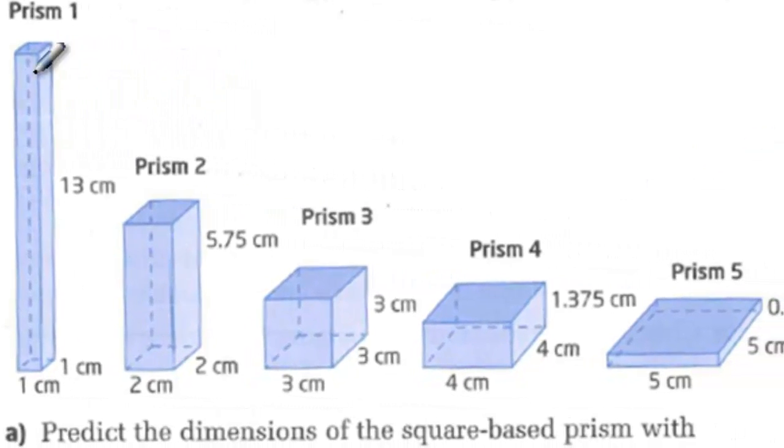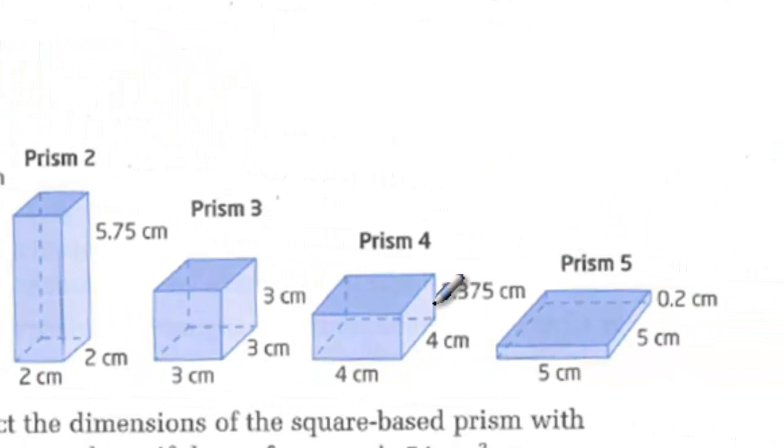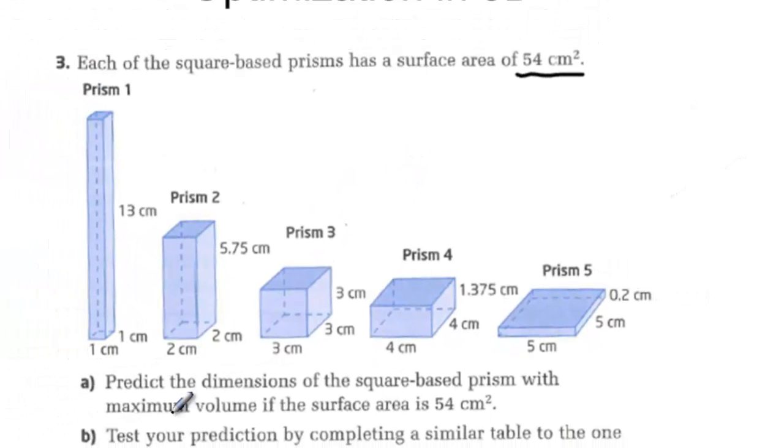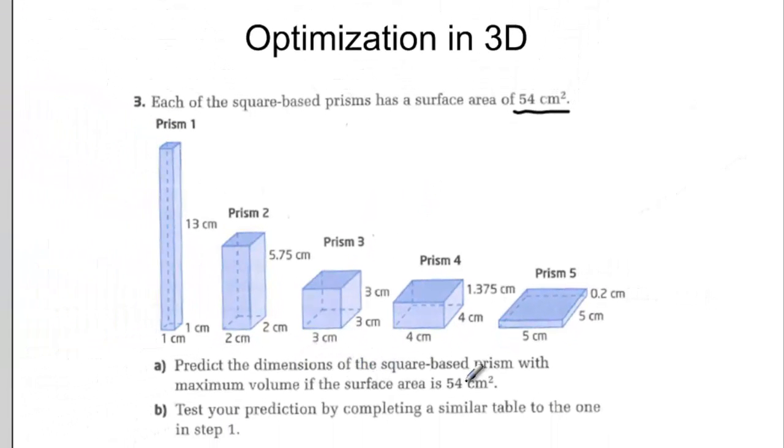Some are long and narrow, some are flat, and we want to see if we can figure out the dimensions of the square base prism that has the maximum volume if the surface area is 54 centimeters squared. We're going to figure that out by doing some calculations. So why don't you predict which one of these five you think will have the maximum volume. In a few minutes we'll see if you're right.